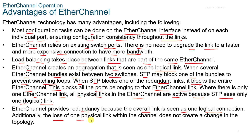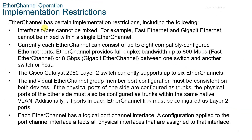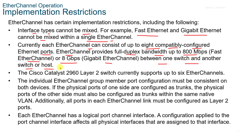EtherChannel provides redundancy because the overall link is seen as one logical connection, and the loss of one physical link within the channel does not create a change in the topology. Now there are some implementation restrictions. Interface types cannot be mixed — for example, fast Ethernet and gigabit Ethernet cannot be mixed within a single EtherChannel. Currently, each EtherChannel can consist of up to eight compatibly configured Ethernet ports. EtherChannel provides full duplex bandwidth up to 800 megabits for fast EtherChannel, or 8 gigabit for gigabit EtherChannel, between one switch and another switch or a host.